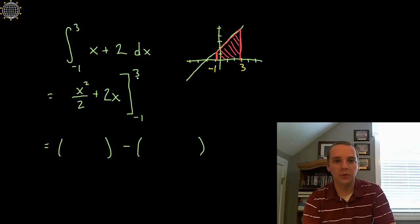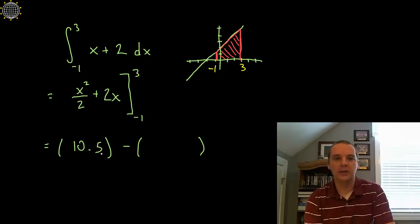So if you plug in a 3, let's try to do a little mental math here. 3 squared is 9, 9 over 2 would be 4.5 or 4 and a half. And then 2 times 3 is 6, so 6 and 4.5, I'll just use decimal notation, this would be 10.5. You could of course write it as a fraction if you wanted to.